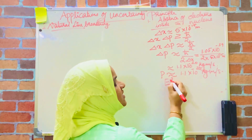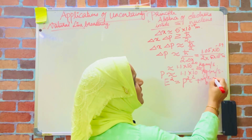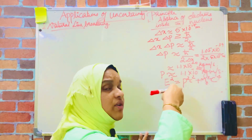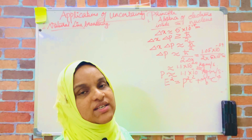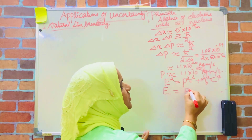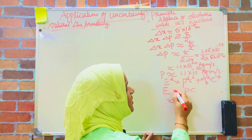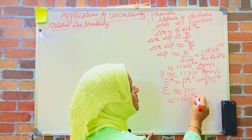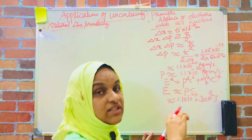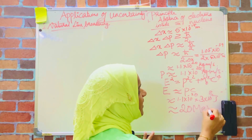The relativistic expression is E squared equals P squared C squared plus M0 squared C raised to 4. Since P is very high, the rest mass energy M0 can be neglected, and the expression simplifies to E equals P times C. Putting in these values, E is approximately 1.1 into 10 raised to minus 20 into 3 into 10 raised to 8 joules, which on converting to mega electron volts gives approximately 20 MeV.